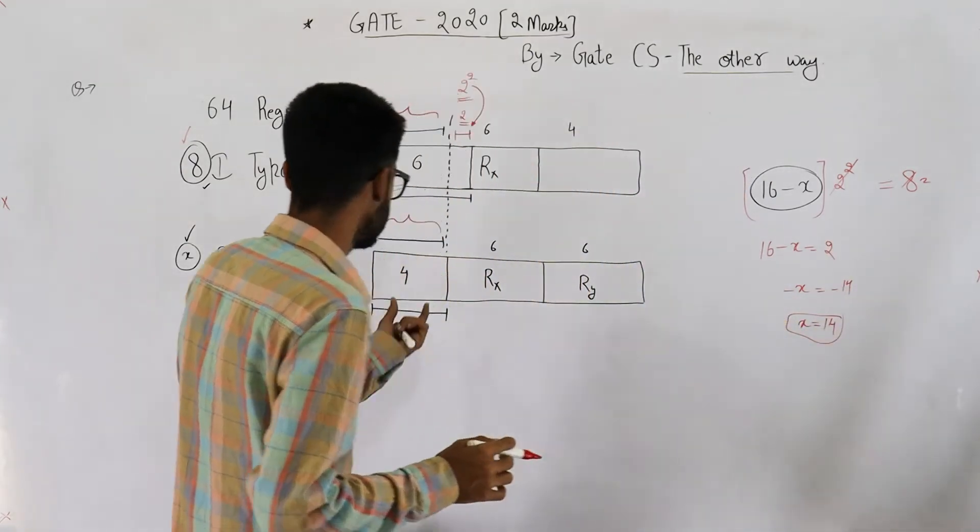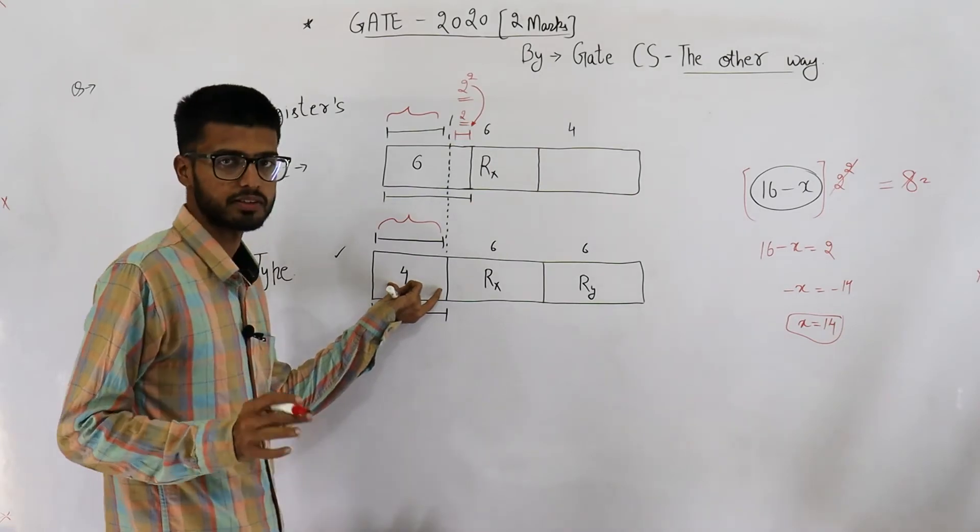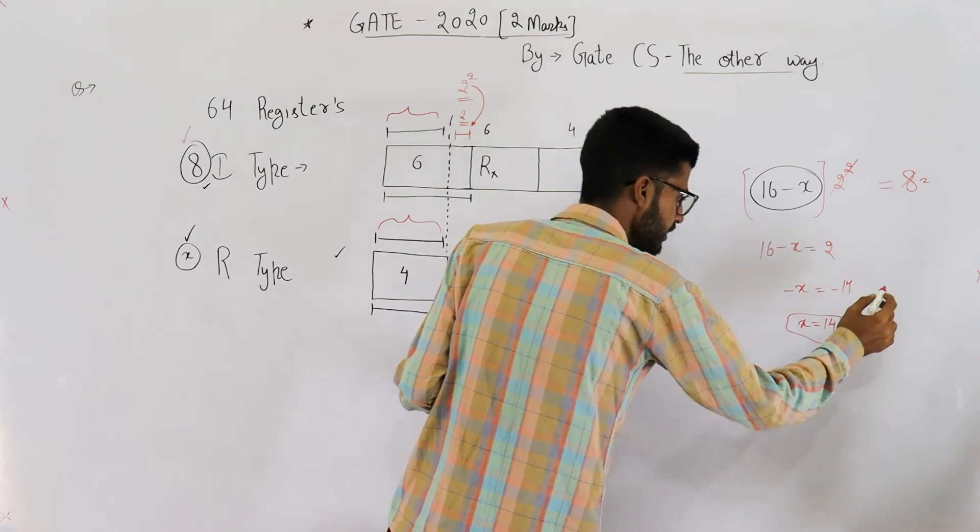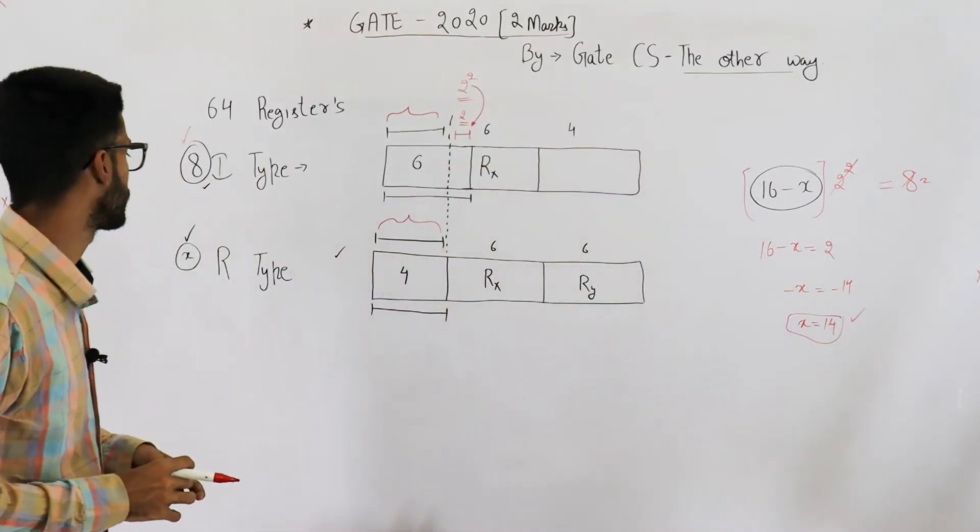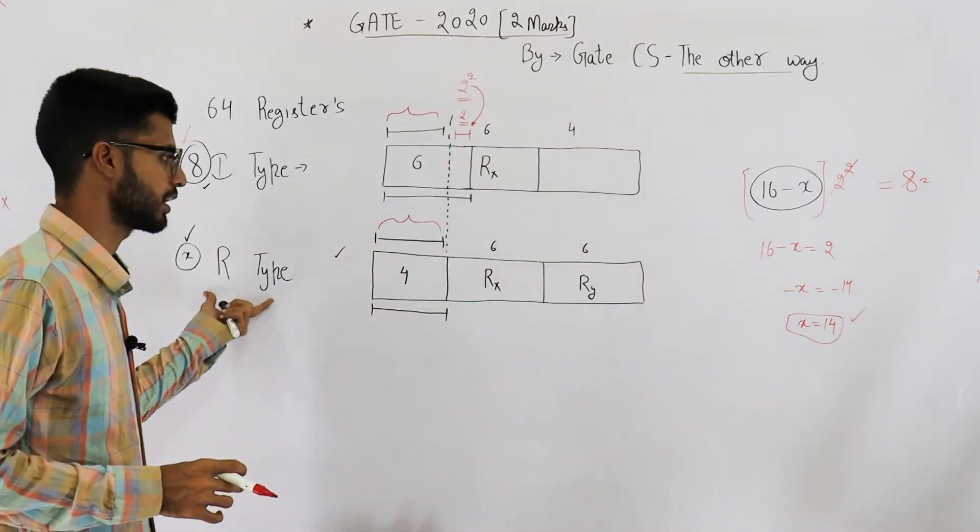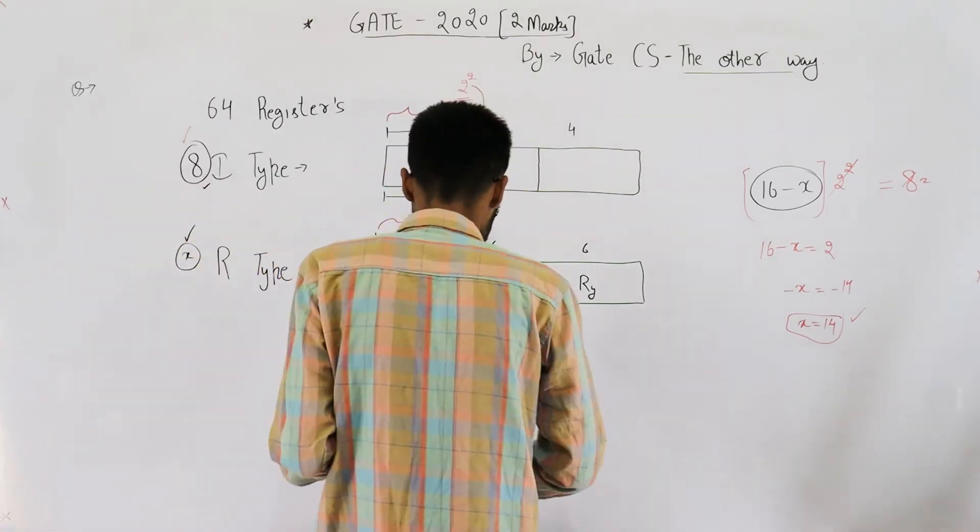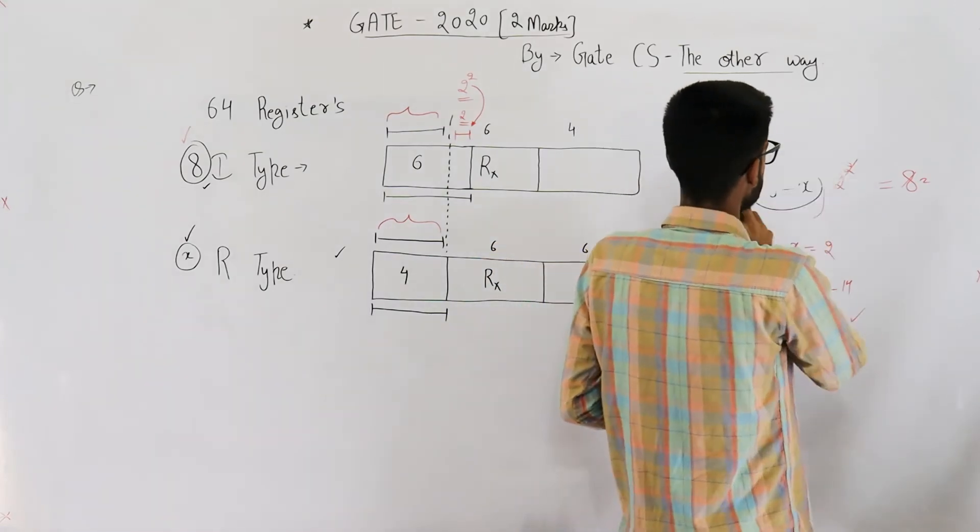So instead of just eight combinations, the answer that we were getting earlier, now using this method, we can support 14 R type combinations or 14 R type instructions. Let's just analyze this, are we getting this number 14?